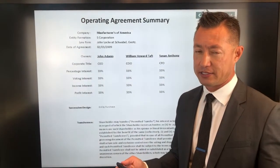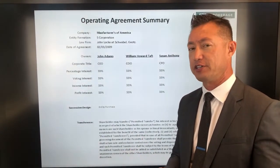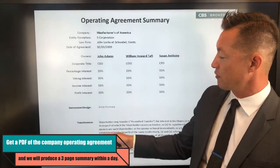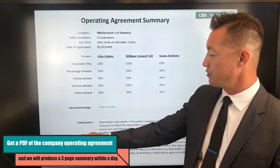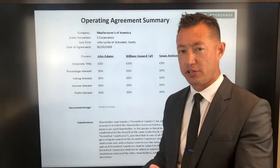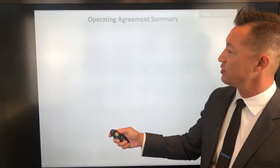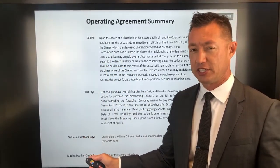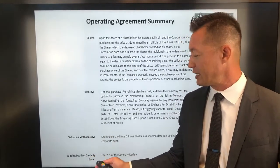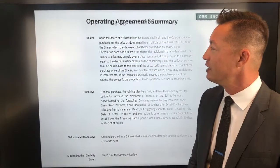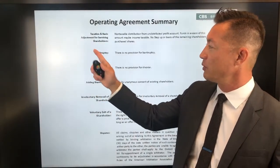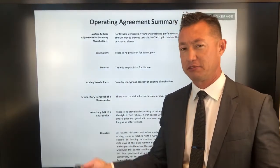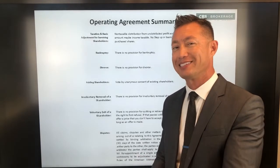If you like this topic and want to discuss how to market this or review operating agreements, CBS Brokers can help. Here's an example of a real shareholder operating group review. We look for transferability — the ability to own shares in trust, life insurance policies in trust, or funding in trust. We look at what happens at the death trigger, disability triggers, and valuation methodology. These businesses may have been set up years ago and never revisited in terms of valuation methodology or funding. We also look at tax basis, bankruptcy provisions, adding or removing shareholders, and retirement. Some of these things will be in existing operating agreements, some won't, and some may want to add them.